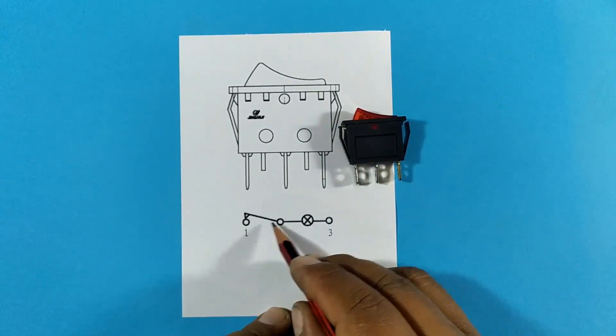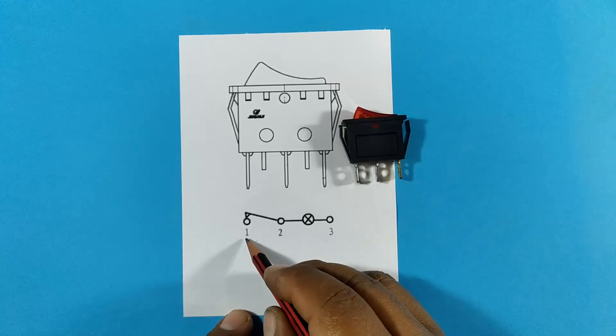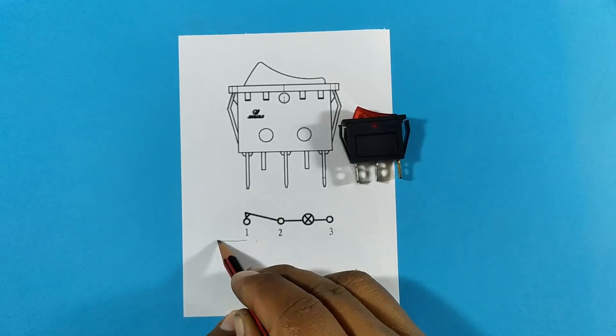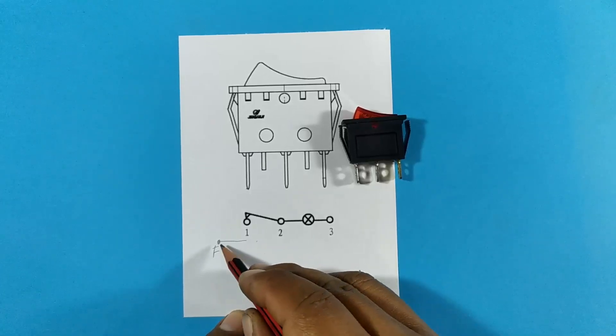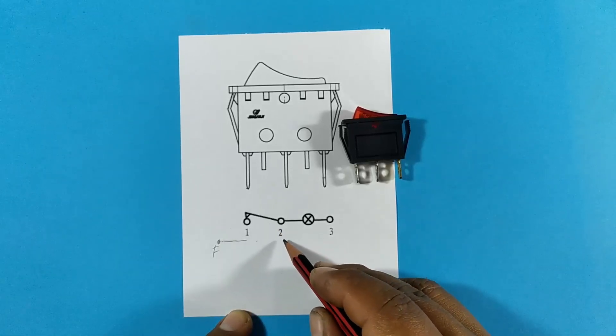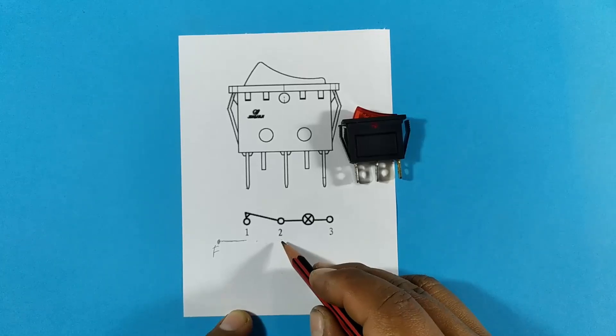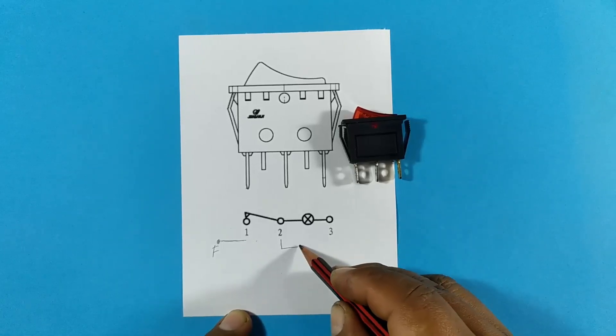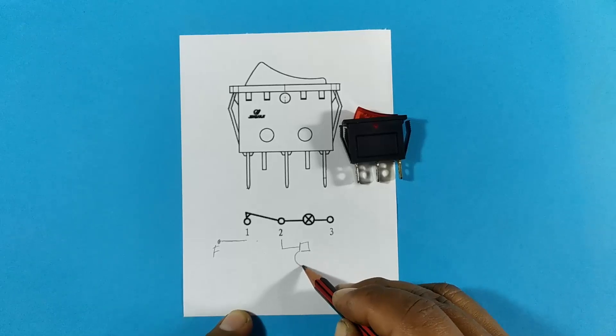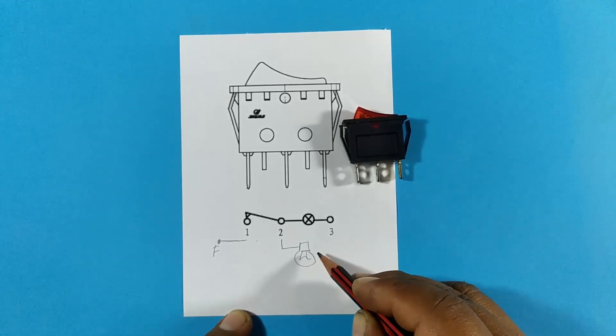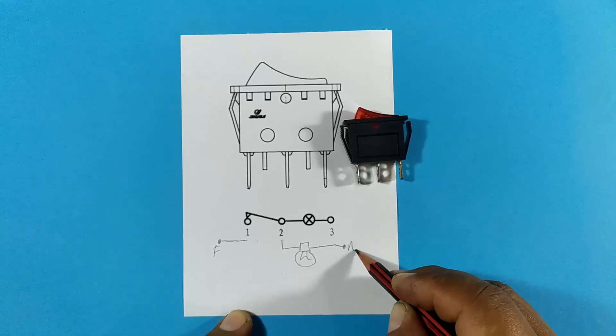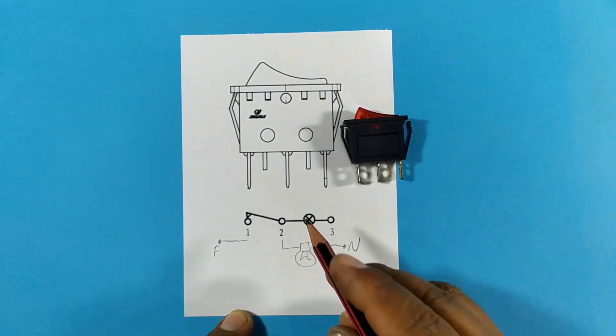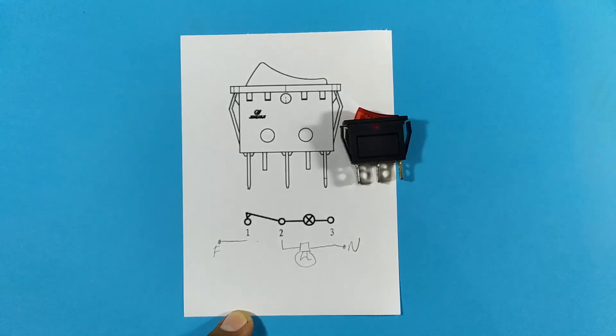Therefore, if I only had pin 1 and pin 2, what I would have to do would be connect this to phase. Phase would enter through pin 1. When you close the switch it would go through pin 2, and this is where you would have to connect the light bulb. And from here, I would have to send it towards neutral. And ready. I close the switch and the light bulb comes on. I open the switch and the light bulb goes off.